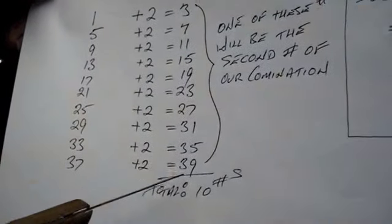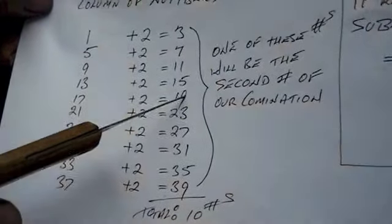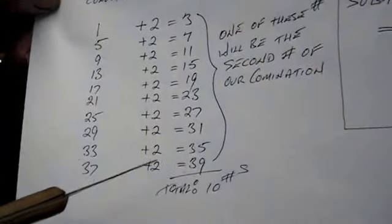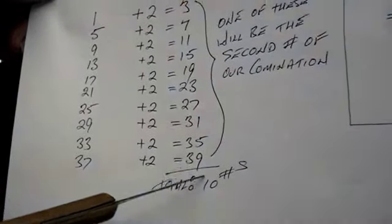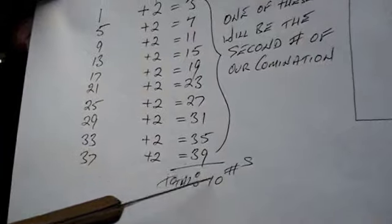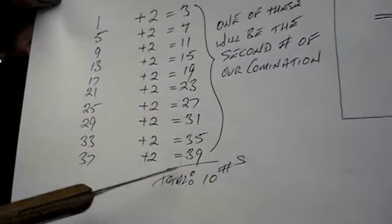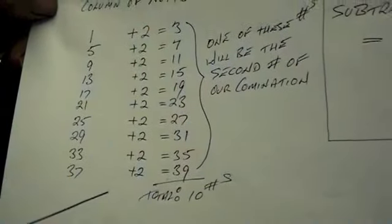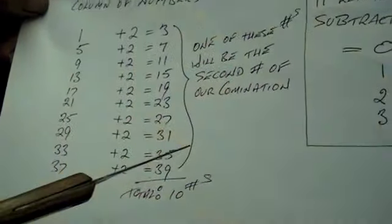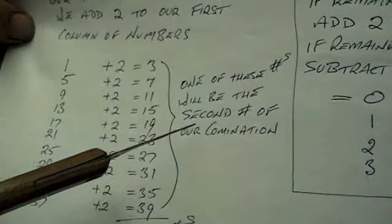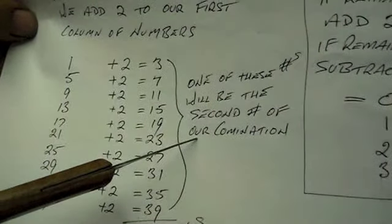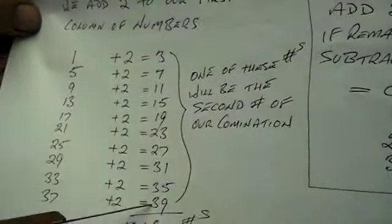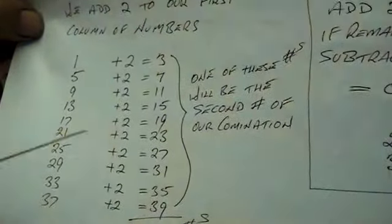Again, we'll finish up with ten numbers. Obviously, we stop before the zero, the forty, if you like, because that's all the combinations, all the numbers on the dial. Ten numbers. One of these will be the second number of our combination. And we have to find out which one of those is our second number.